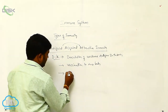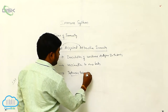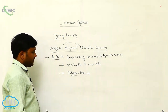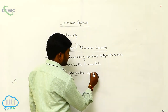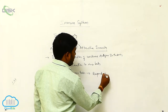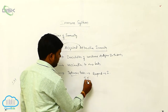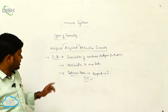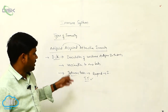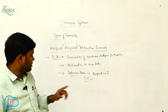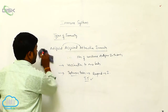For example, the tetanus toxoid, which is given to tetanus-affected persons. It responds to produce the immune response against the tetanus disease. So if you are giving the injection of tetanus toxoid, that produces the immune response against the tetanus pathogens. Next, passive acquired immunity.